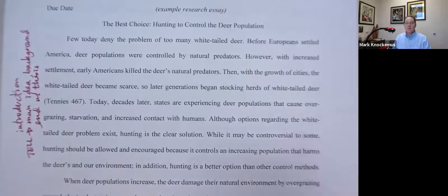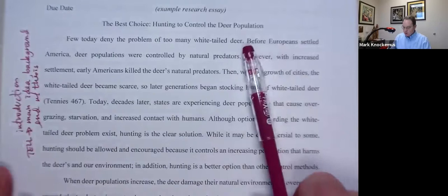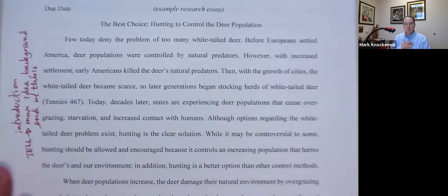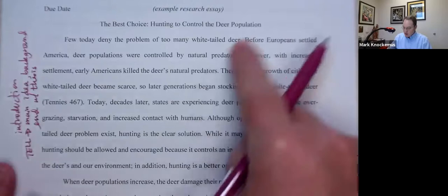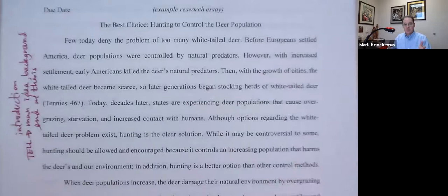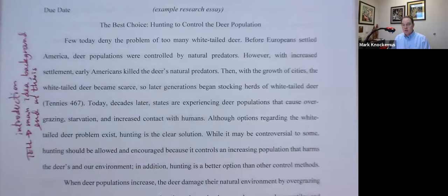"Few today deny the problem of too many white-tailed deer." You'll notice there's no citation. That came from me. So will every sentence in your research essay be documented? No, it won't. "Before Europeans settled America, deer populations were controlled by natural predators. However, with increased settlement, early Americans killed the deer's natural predators." All that came from me, my knowledge. You're going to know something about your topic because that's why you picked it. You don't have to cite every single sentence in your research essay. In fact, if you are citing every single sentence, that is not a research essay — all you're doing is copy-paste.